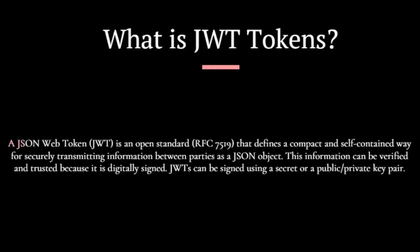To understand what JWT tokens are: a JWT is an open standard that defines a compact and self-contained way for securely transmitting information between parties as a JSON object. This information can be verified and trusted because it is digitally signed. JWTs can be signed using a secret or a public-private key pair.